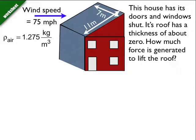So the question says, this house has its doors and windows shut, its roof has a thickness of about zero. So the roof's thickness is about an inch really, but we're going to ignore that and call it pretty much zero. How much force is generated to lift the roof? In this situation, I've got the wind blowing at 75 miles per hour outside the house. This is a category one hurricane blowing outside the house on the roof.